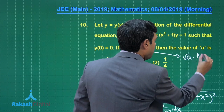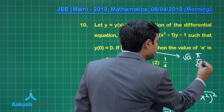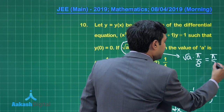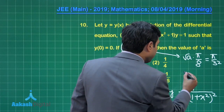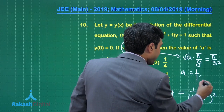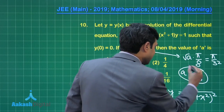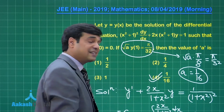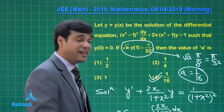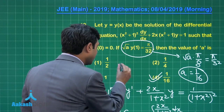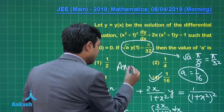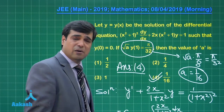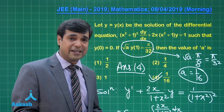From the question, √a · y(1) = π/32, meaning √a · (π/8) = π/32, giving a = 1/16. The correct answer is option number 4.